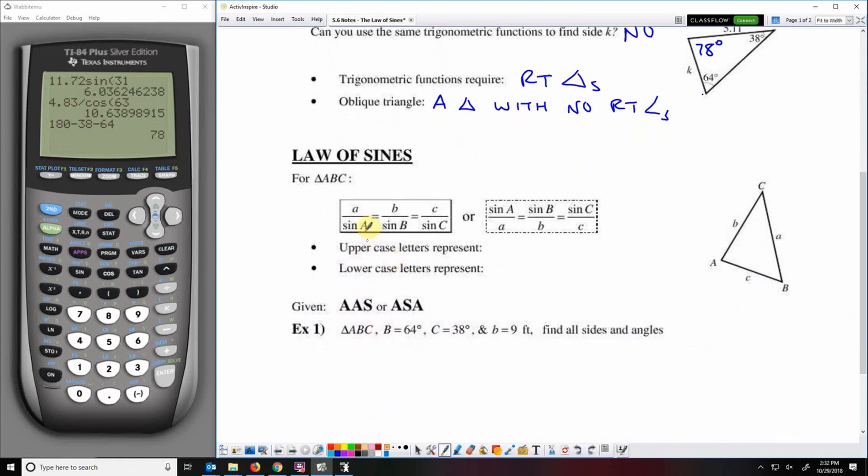So here is the law of sines. Side over the sine of its opposite angle equals another side over the sine of its opposite angle equals another side over the sine of its opposite angle or the reciprocal. In this case those capital letters those are angle measures. The lowercase letters are side lengths.